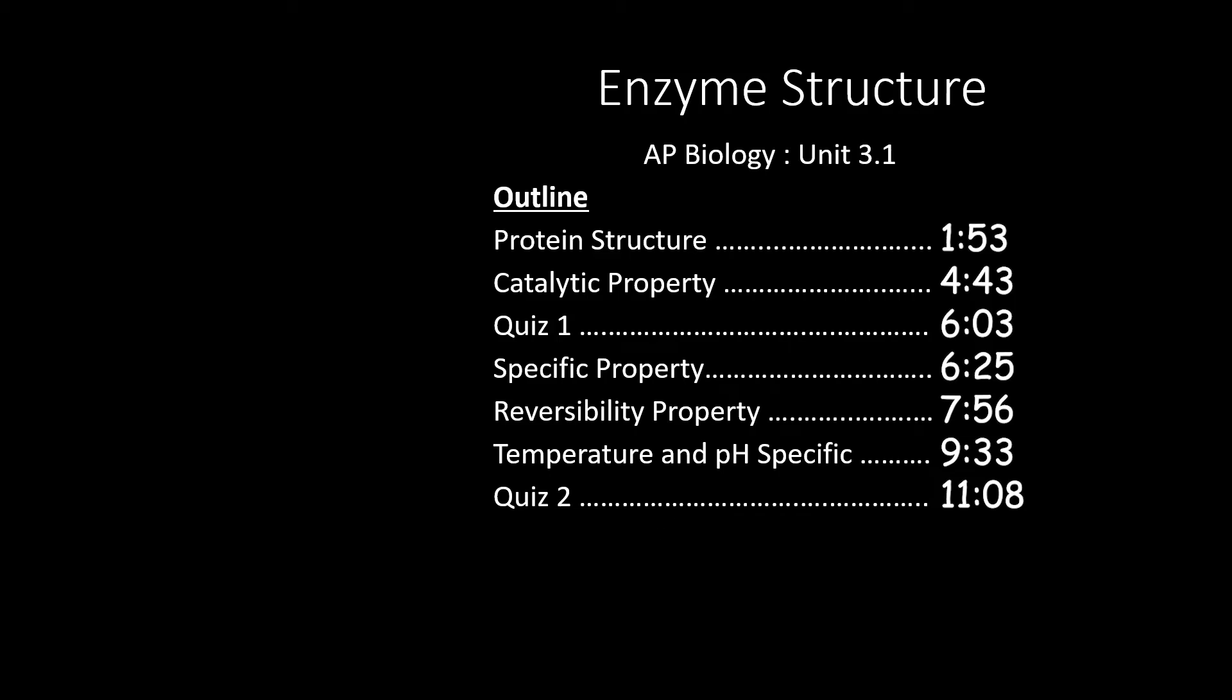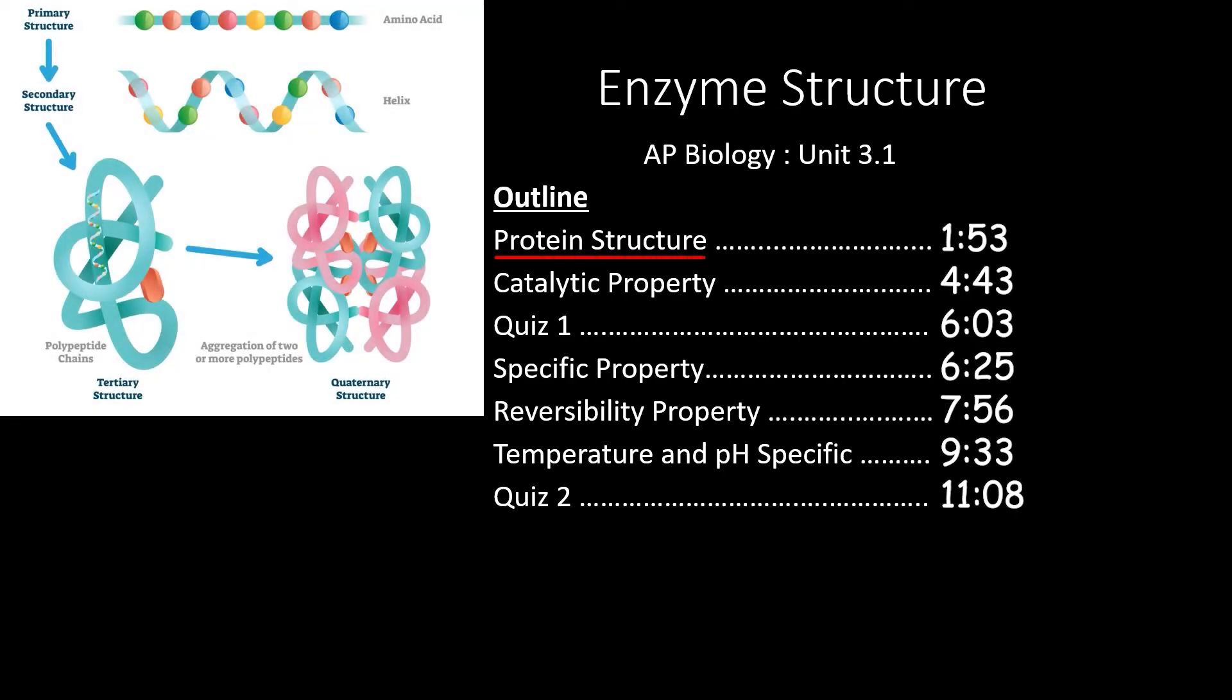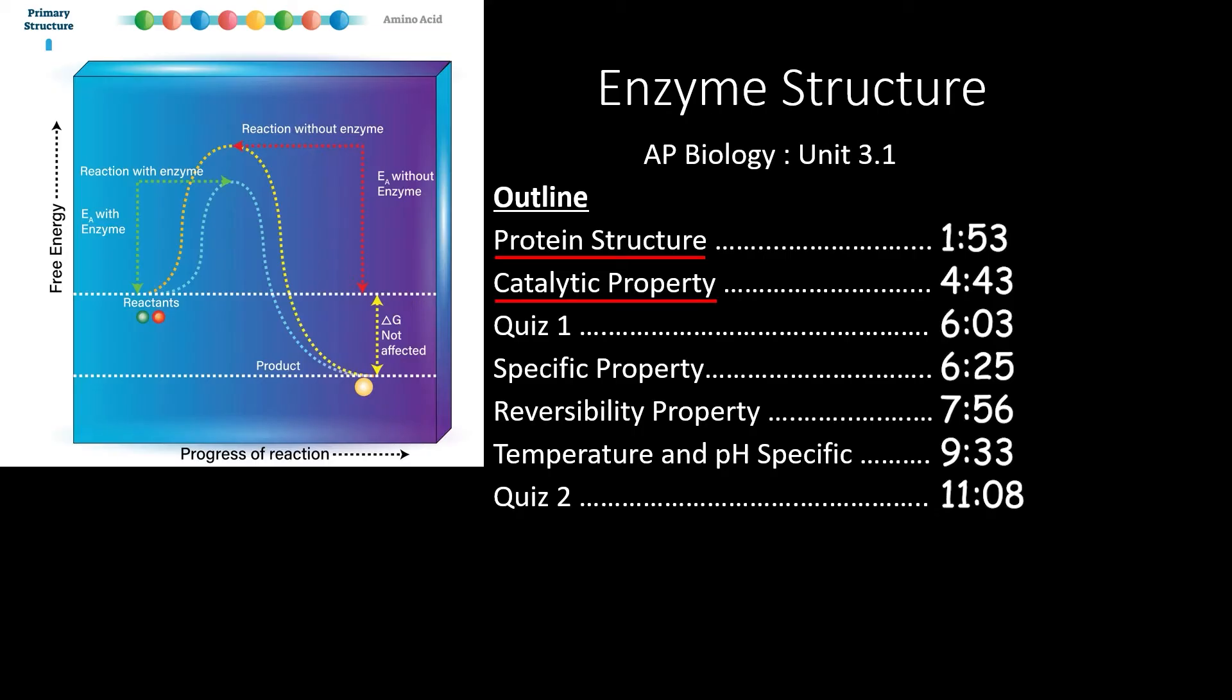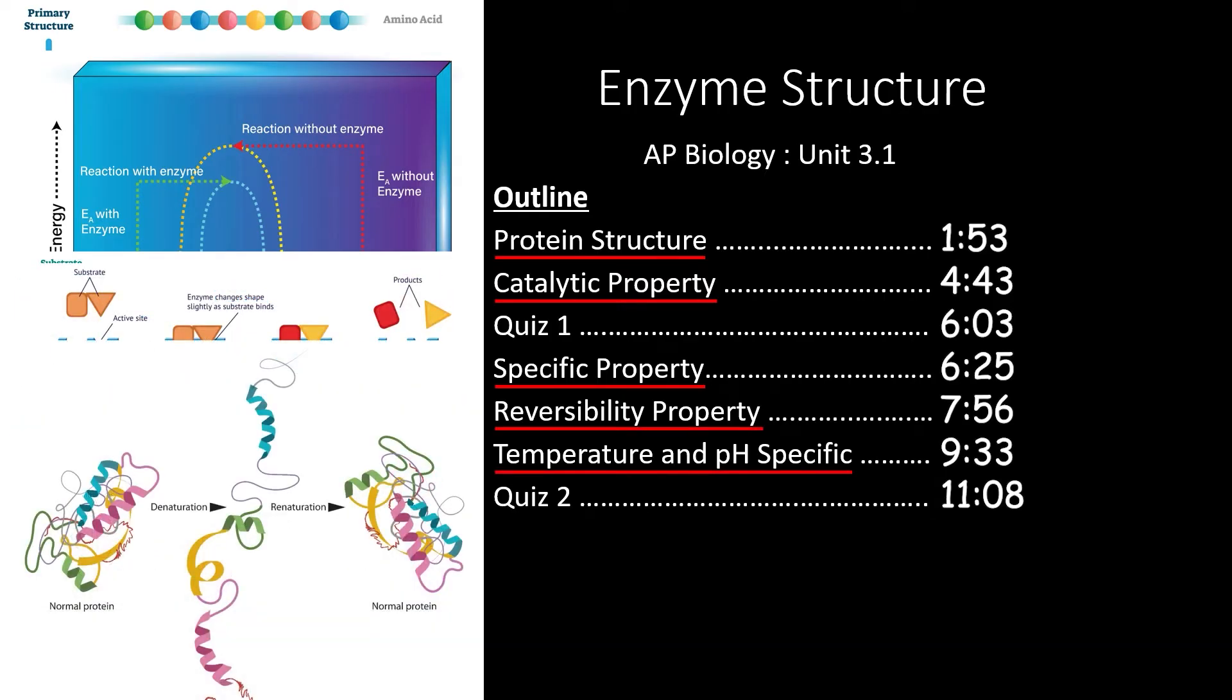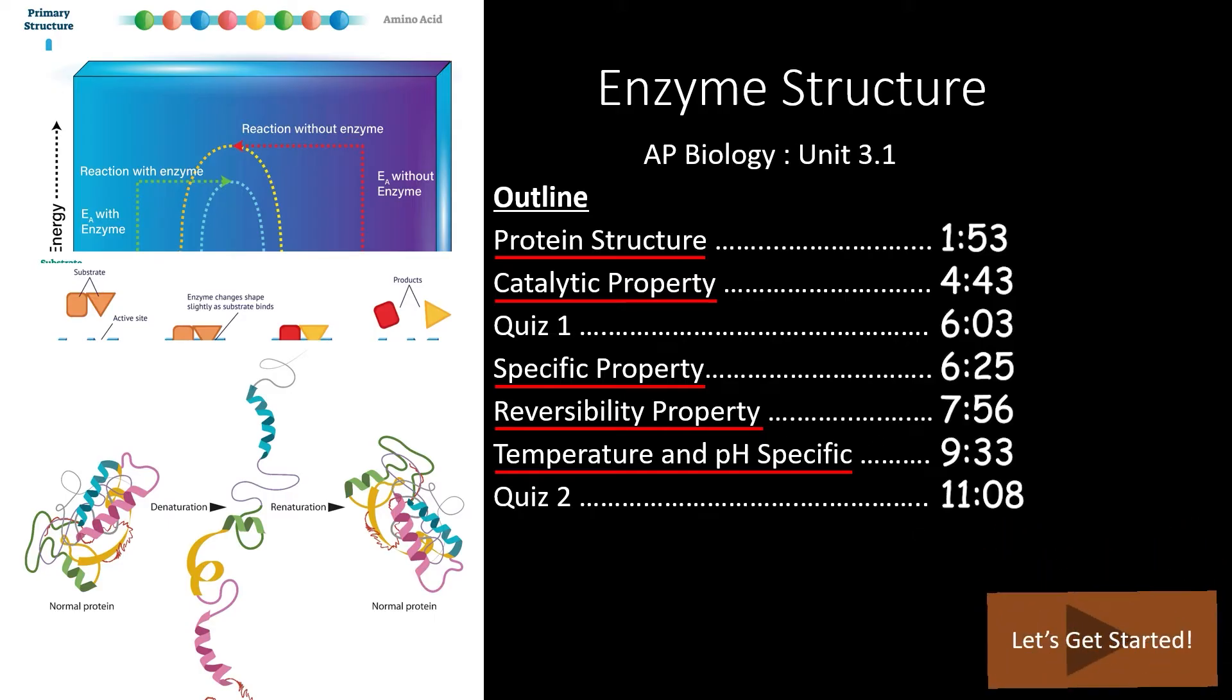This video covers section 3.1 of the AP Biology Curriculum, Enzyme Structure. In this video, we will start by analyzing the structure of proteins and seeing what structural features make enzymes special. Then we will look at how the active site of an enzyme allows for an enzyme to catalyze a specific reaction. After the first quiz, we will look at why enzyme structure makes enzymes specific to one type of molecule. Finally, we will see how many enzymes are reversible and why they are temperature and pH specific.